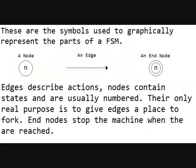These are the symbols used to graphically represent the parts of a finite state machine. The circle with an end in it is a node. The arrow in the middle is an edge, and to your right you have a circle with a smaller circle and an end in it — those are end nodes. Edges describe actions. Nodes contain states and are usually numbered. Their only real purpose is to give edges a place to connect. End nodes stop the machine when they are reached.